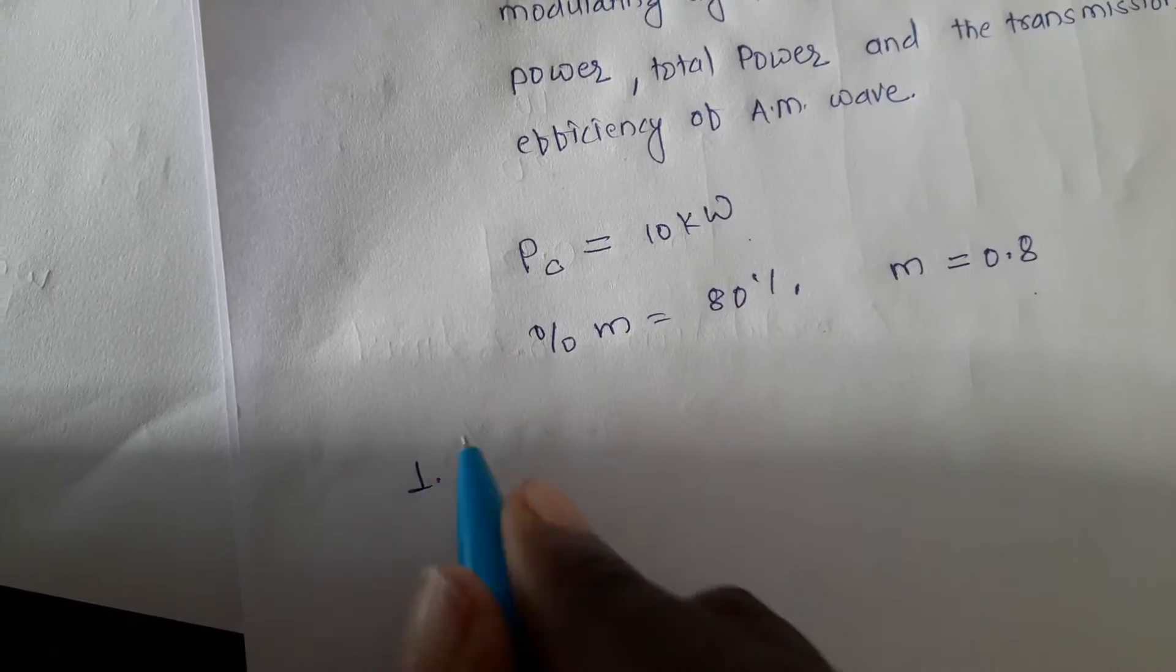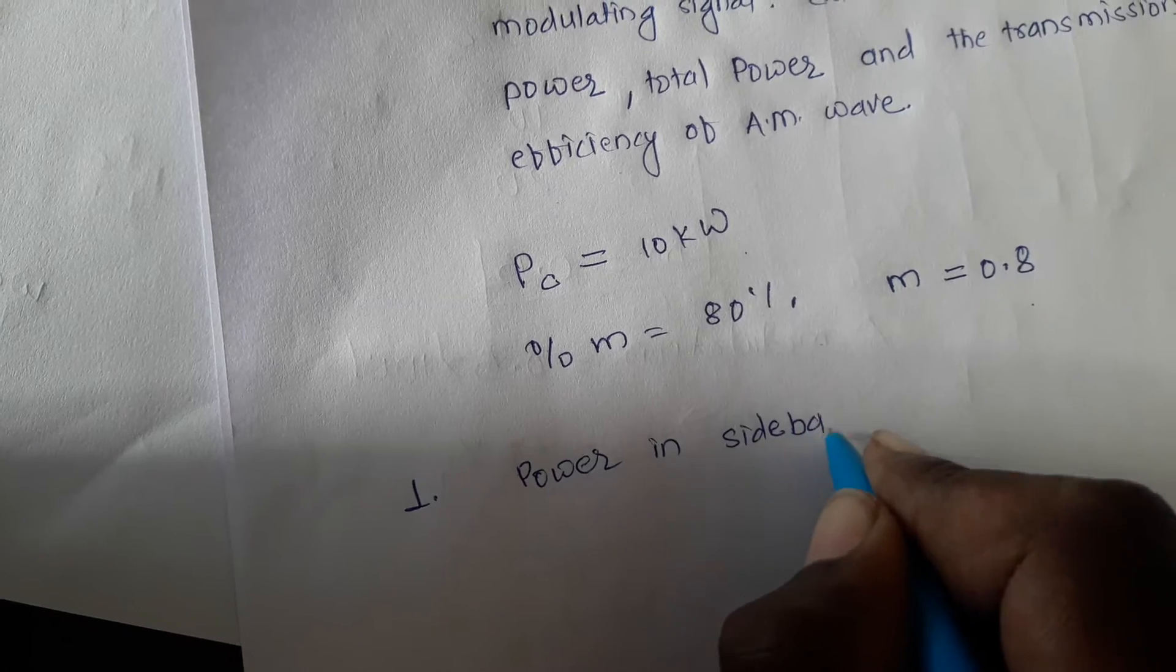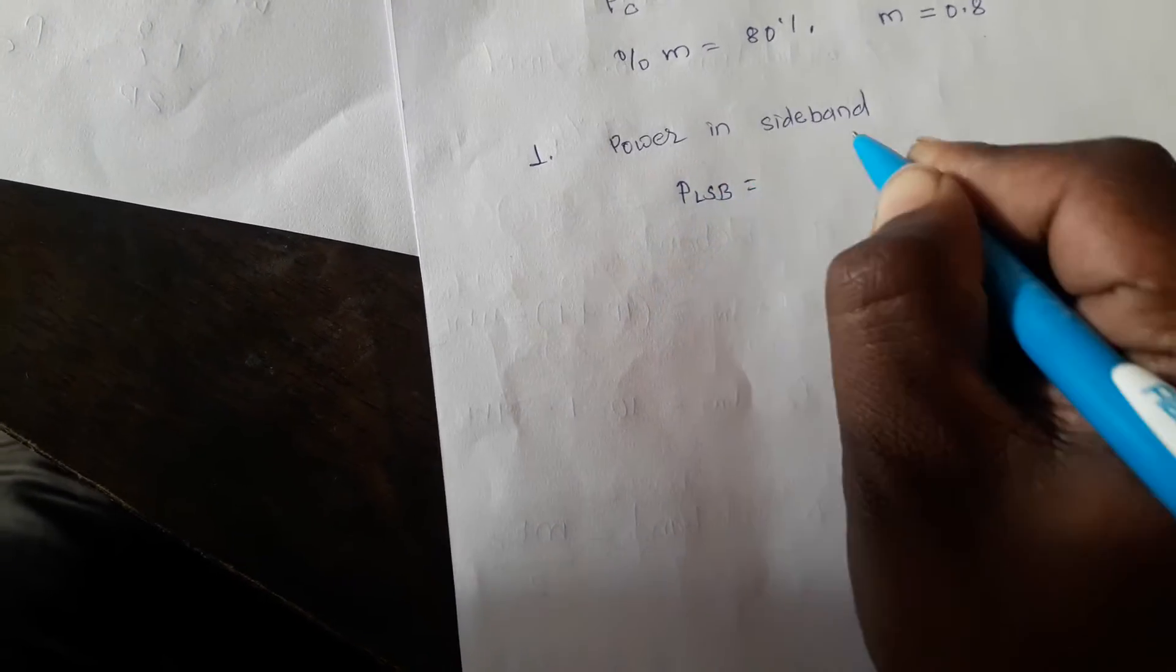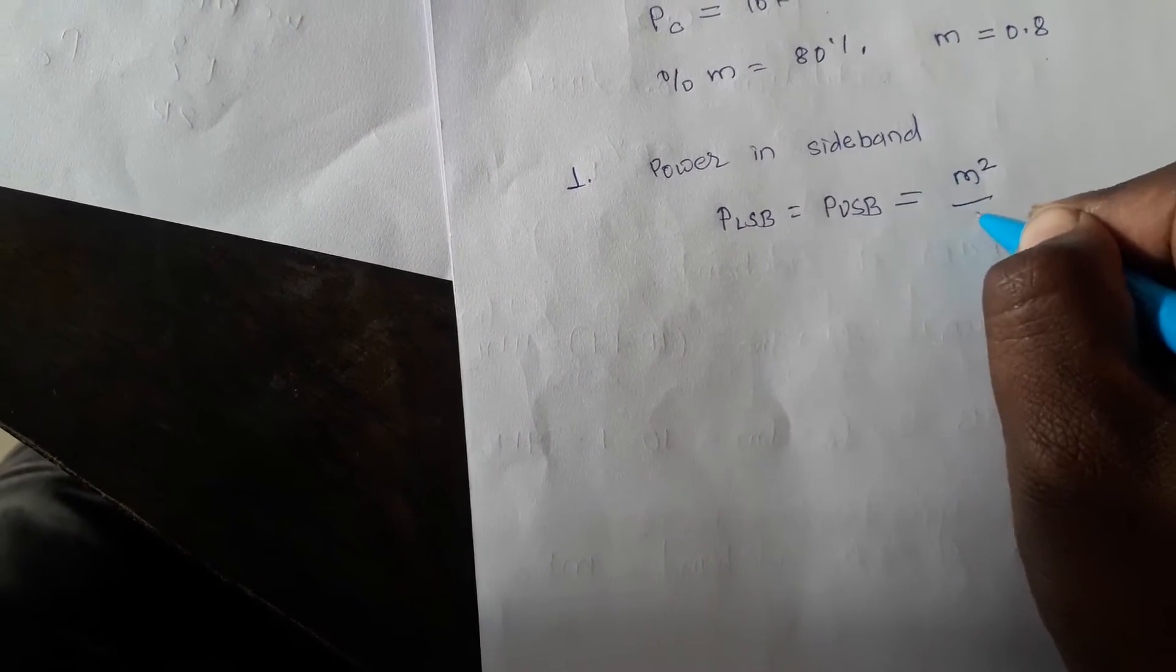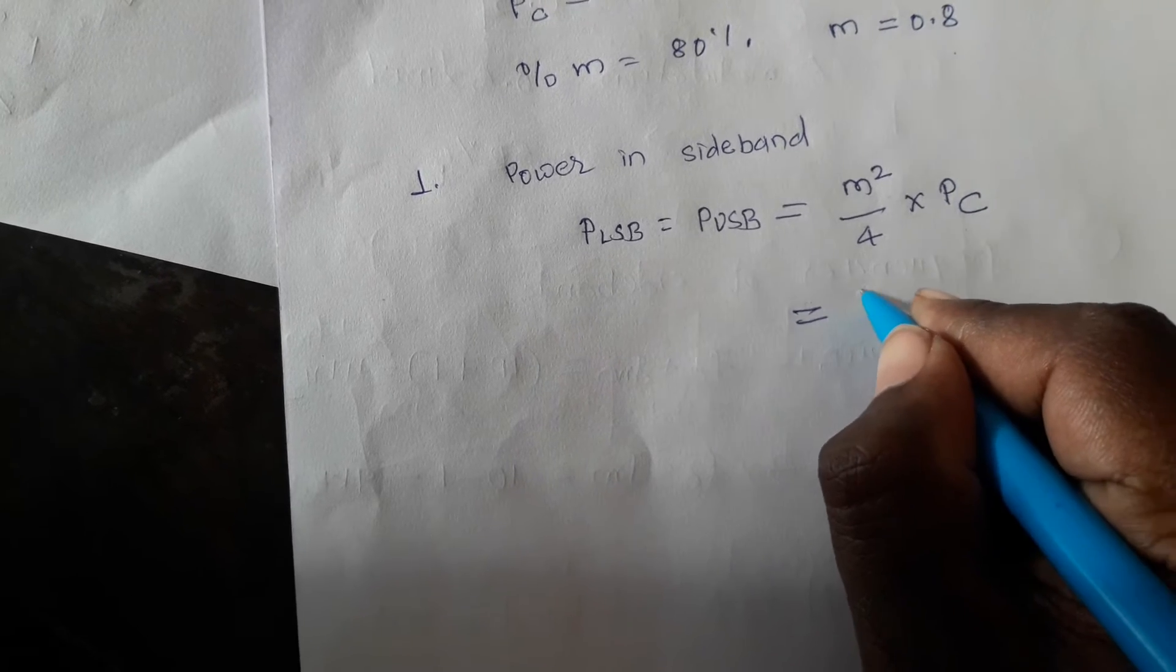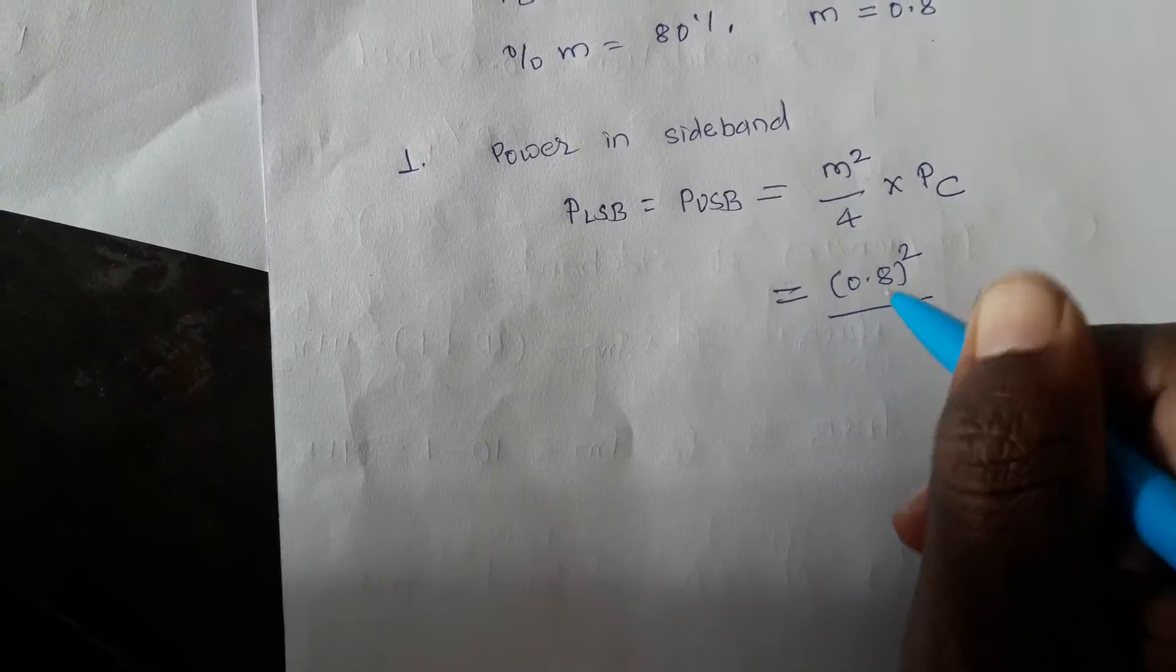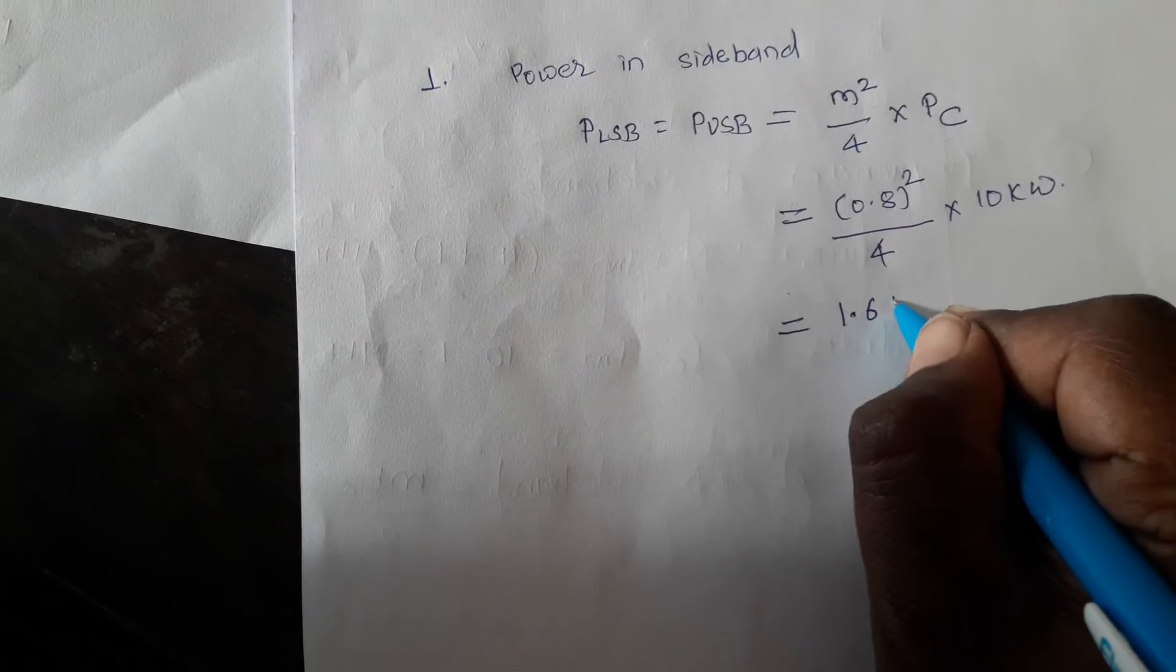As per these two data, first we have to calculate the sideband power. Power in sidebands, PLSB equals PUSB equals m squared by 4 times PC. We know the values of m and PC, so substitute: m is 0.8 squared divided by 4, and PC is 10 kW. The power in sidebands PLSB and PUSB, after calculating, becomes 1.6 kW.